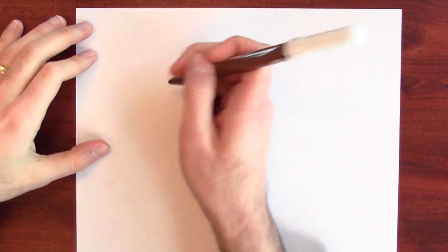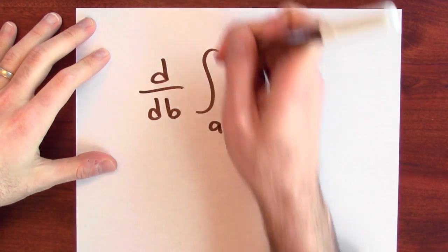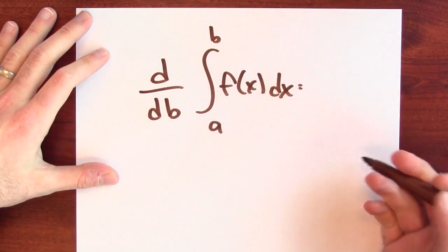We've seen what happens when we differentiate the accumulation function. That's the fundamental theorem of calculus. If I take the derivative of the integral from a to b of f of x dx, what do I get?